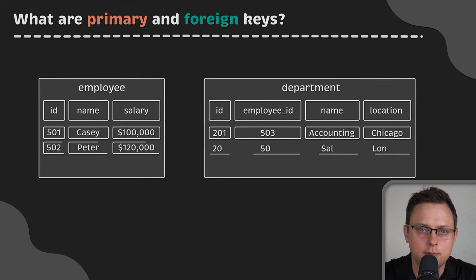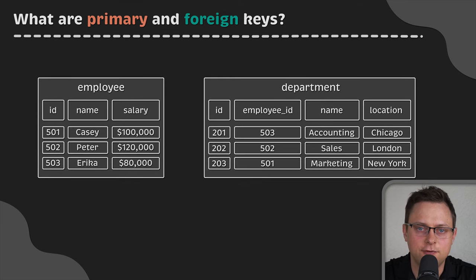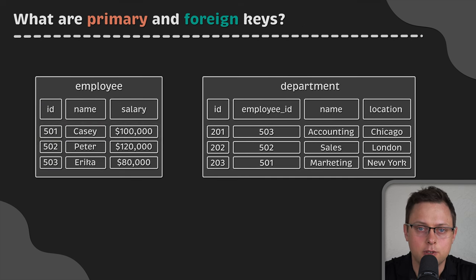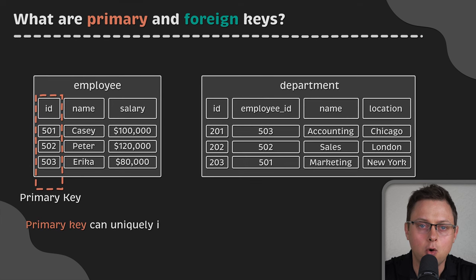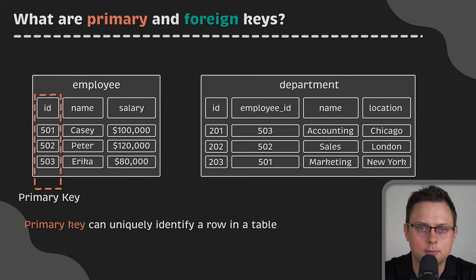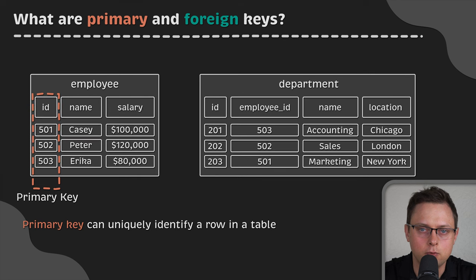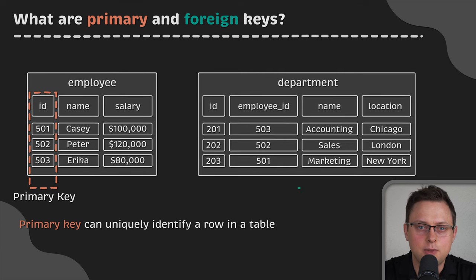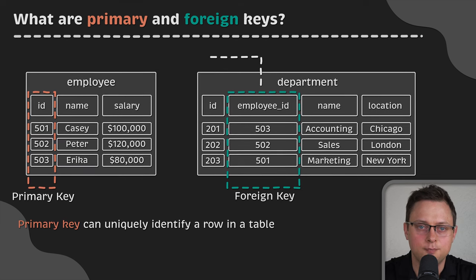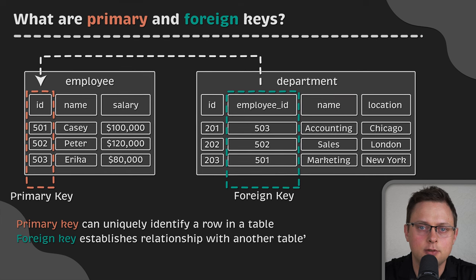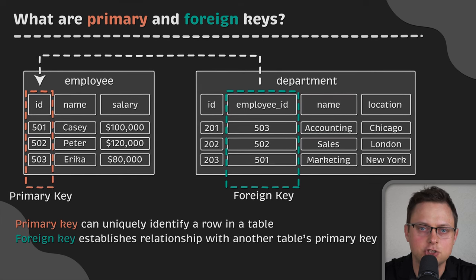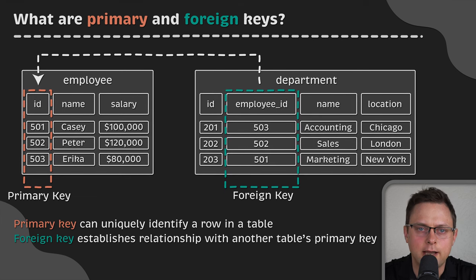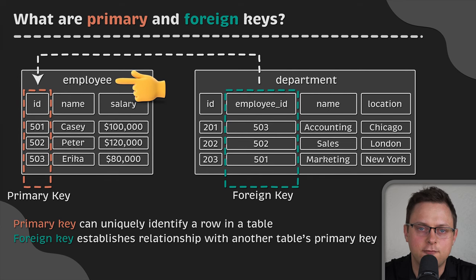Typically, in a relational database, data is organized into different tables made of attributes and records. The primary key in SQL is a single column, or sometimes multiple columns, that can uniquely identify a row in a table. This is usually the ID column, which is short for identifier. Another column in a table that establishes a relationship with another table's primary key via a shared value is called a foreign key. Foreign keys are also typically titled IDs, but prepended with the name of the reference table.